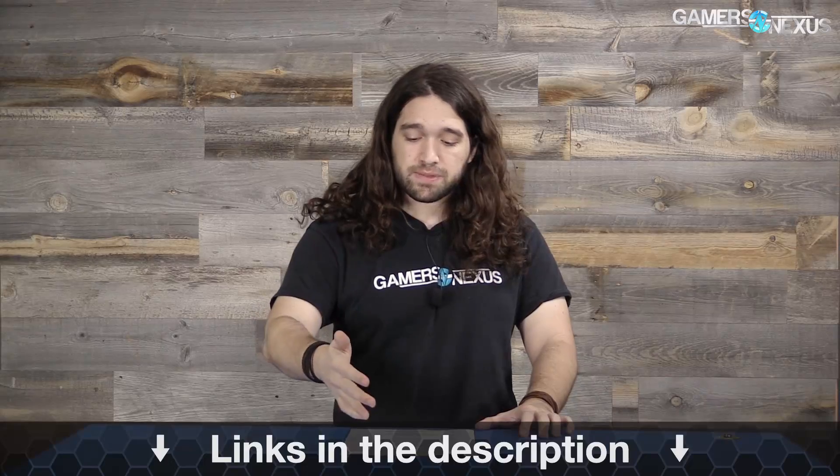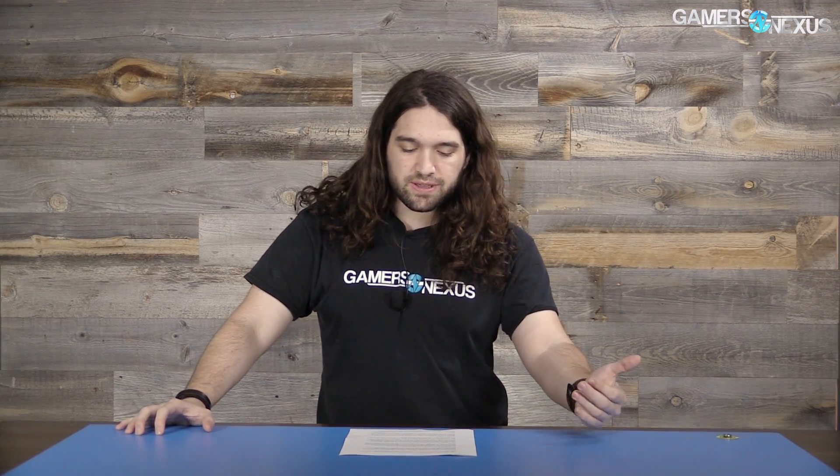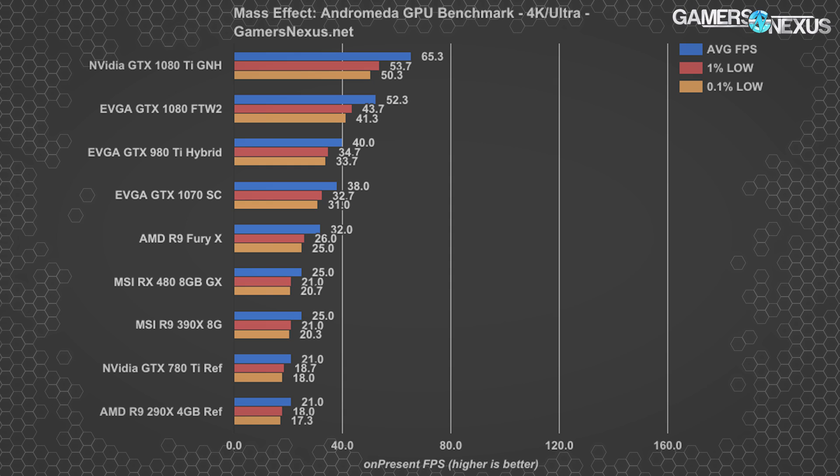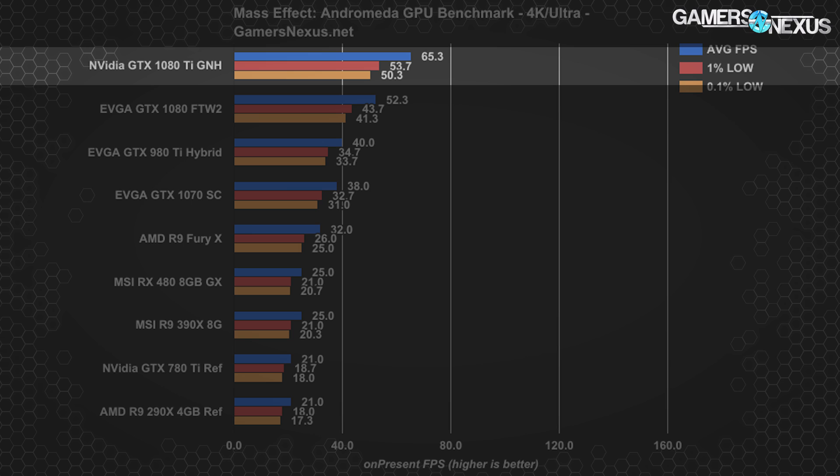Having defined those discoveries, let's get into the benchmark charts for 4K, 1440, and 1080p. The full testing methodology is linked in the description, along with the rest of the analysis. Drivers were the latest at time of benchmarking — official supported drivers from NVIDIA and AMD specifically released for Mass Effect Andromeda. At 4K Ultra on the Nexus benchmark, our 1080 Ti hybrid is performing around 65 FPS average with 1% lows at 54 and 0.1% lows at 50.